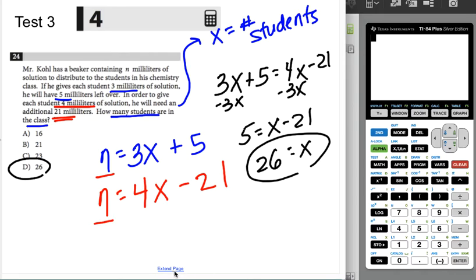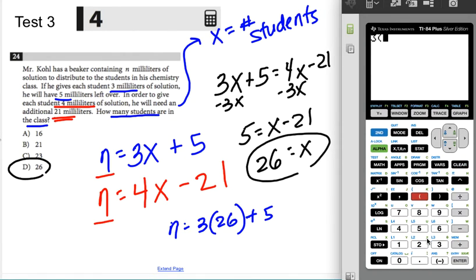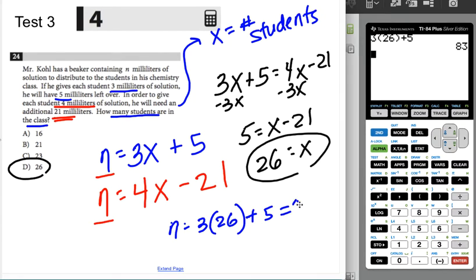Now if you wanted to check that you were right, if you were nervous about it, you could make sure you get the same n when you try both of the equations. If I try the blue equation, I get n equals 3 times 26 plus 5, and I can type that in my calculator to make sure I'm right. So 3 times 26 plus 5. I get that n would be 83 milliliters that he has.